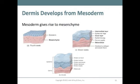The dermis develops from the mesoderm, which gives rise to the mesenchyme. This summarizes the progression of skin development from the fourth week through birth.